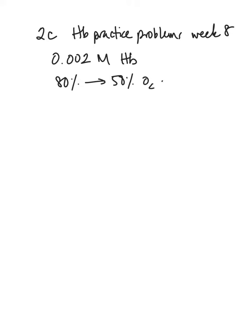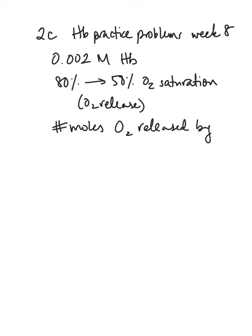So that's a 30% change, and it's telling you that this would lead to oxygen release. That makes sense - if the hemoglobin is saturated with oxygen and then the amount that's saturated decreases, that means the oxygen has been released from the protein, the ligand has left the protein. Now it's asking you to calculate the number of moles of oxygen released by the one liter solution that you have on hand.